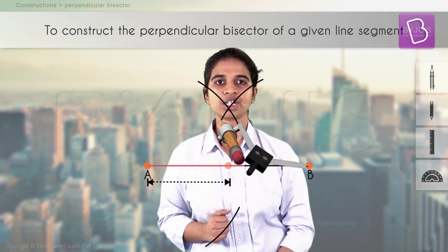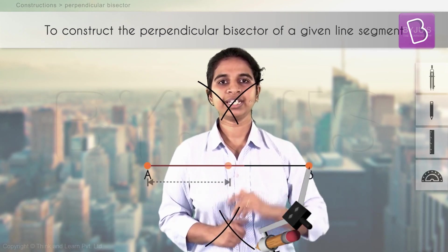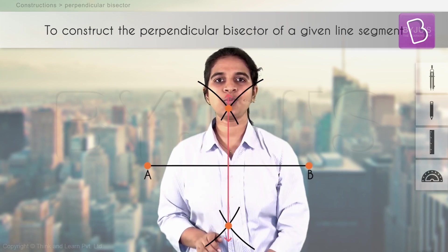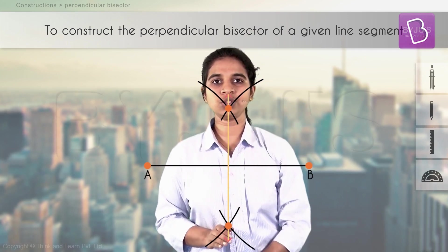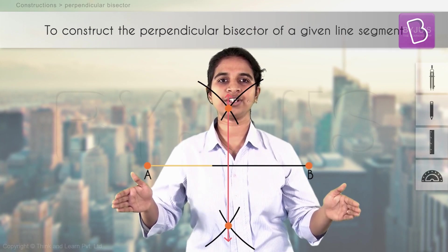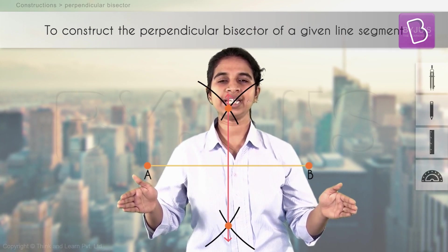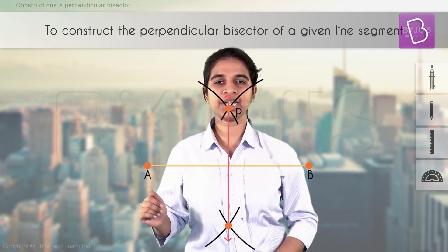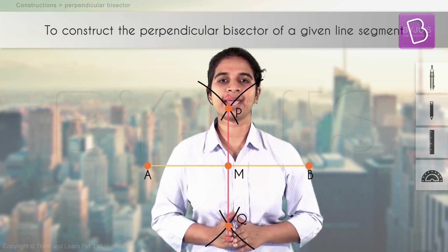Now move the leg of the compass to point B and again draw two arcs — one on the top, one below. Now you have two points. Join the two points — this line passing through these two points is going to be the perpendicular bisector of segment AB. We can call these points P and Q, and this midpoint as M.